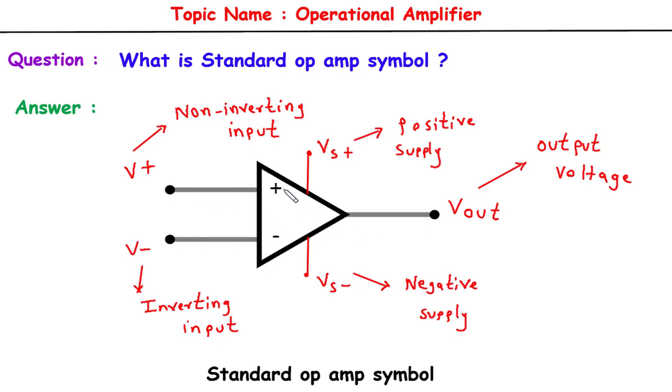The upper input terminal, placed at the top of the triangle, represents the non-inverting terminal or the positive input terminal. Typically, this terminal receives the input signal that we want to amplify or process. To indicate its connection, the non-inverting terminal is depicted as being linked to the positive supply voltage, denoted by a plus sign.